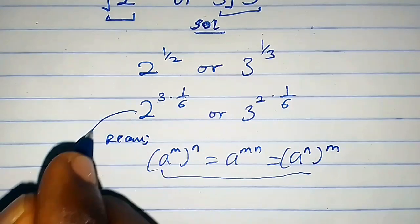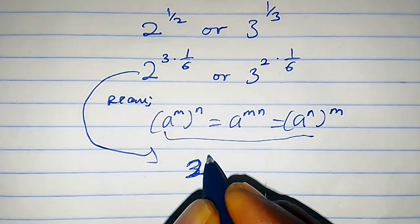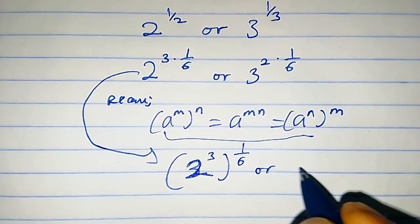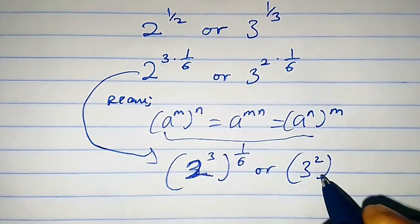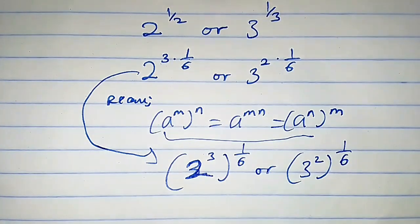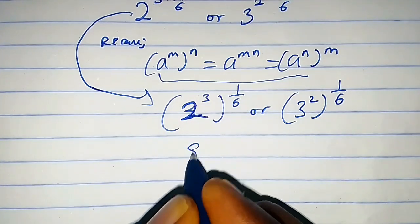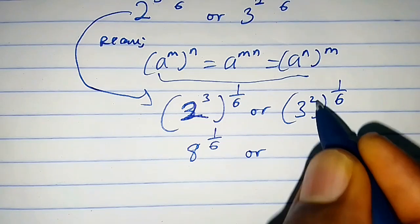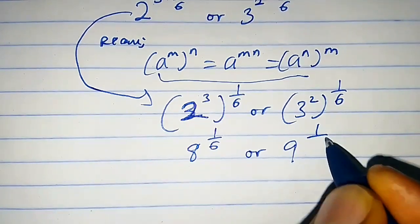From here we're going to have 2 raised to the power 3 times 1/6, or 3 squared in brackets times 1/6. 2 raised to the power 3, that is 8, times the exponent which is 1/6, or 3 squared, that is 9, raised to the power 1/6.